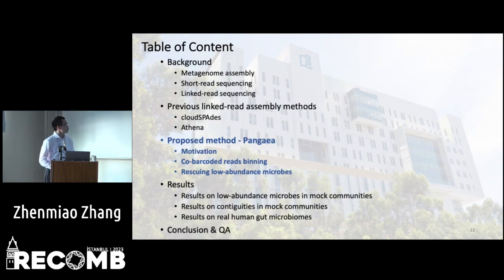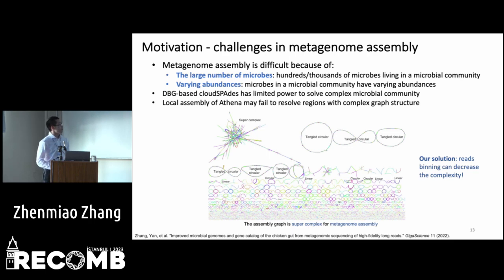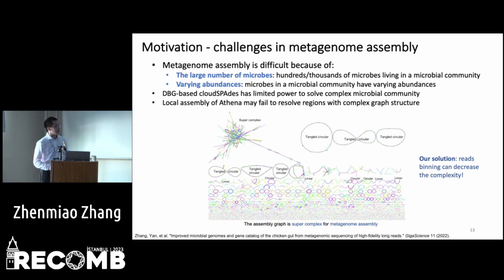In the next part, I will introduce our proposed method. Metagenome assembly faces two major challenges. The first is that there are a large number of microbes in the community, making the assembly graph very complex. The second is that microbes have varying abundances, making path resolution in the DBG very difficult. The DBG-based CloudSPAdes has limited power for complex communities, and Acena's local assembly may fail to resolve bridges with complex graph structures.